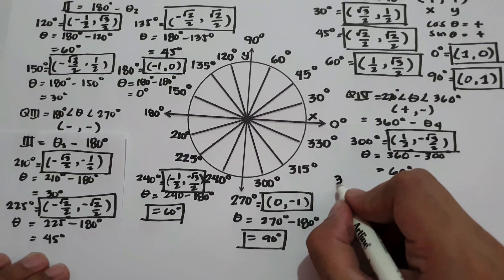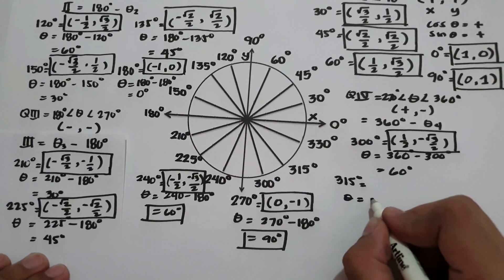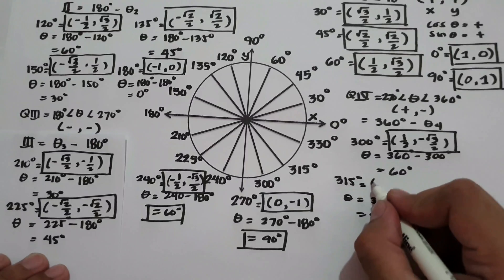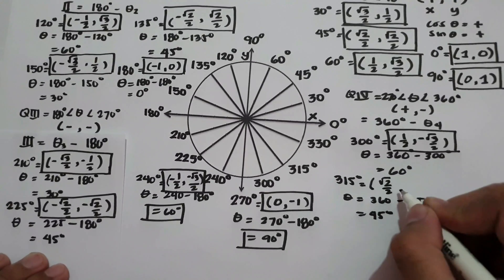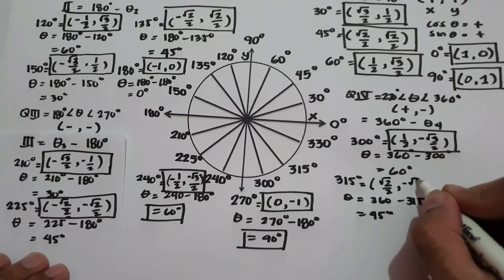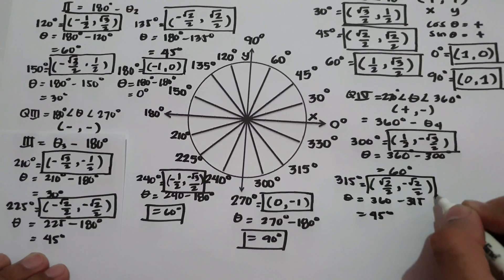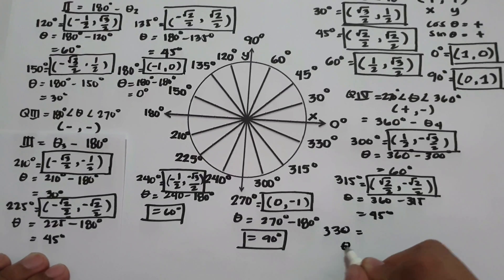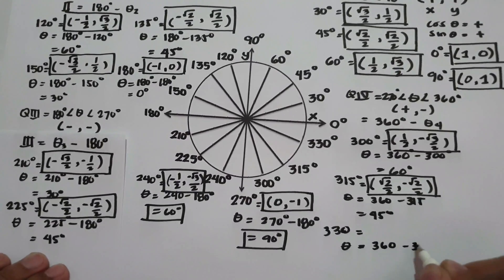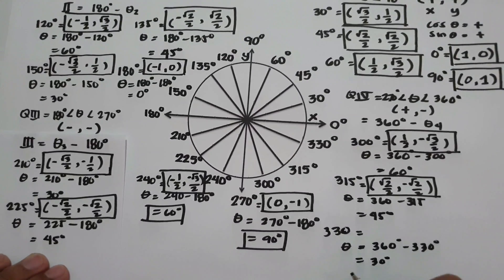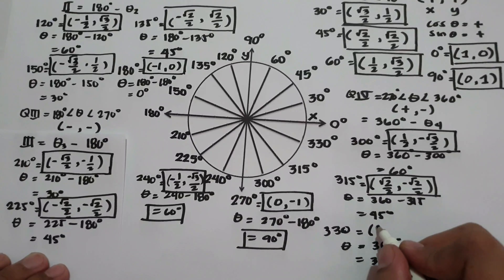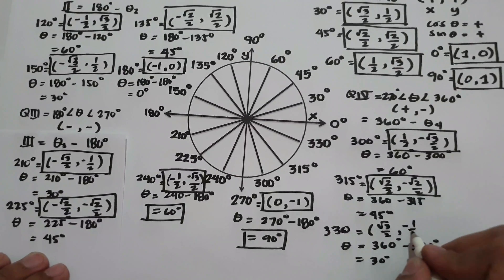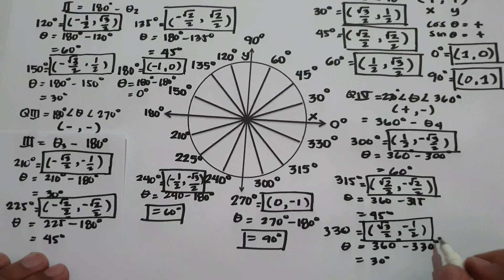How about 315 degrees? The reference angle is 360 minus 315, which is 45 degrees. Cosine 45 in quadrant 4 is square root of 2 over 2, and sine 45 in quadrant 4 is negative square root of 2 over 2. What about 330 degrees? The reference angle is 360 minus 330 degrees, which is 30 degrees. Cosine 30 in quadrant 4 is square root of 3 over 2, and sine 30 in quadrant 4 is negative 1 half. This will be the coordinates of 330 degrees.